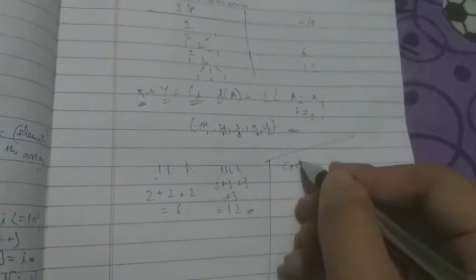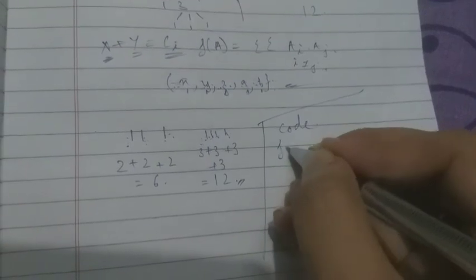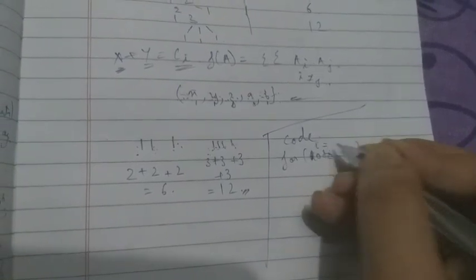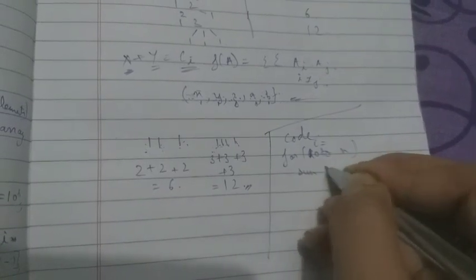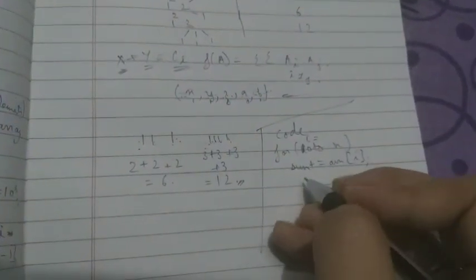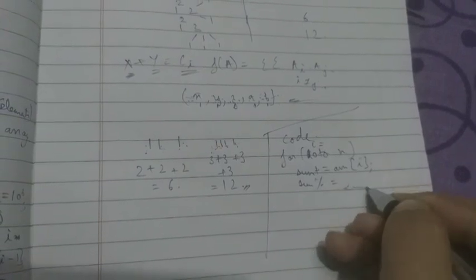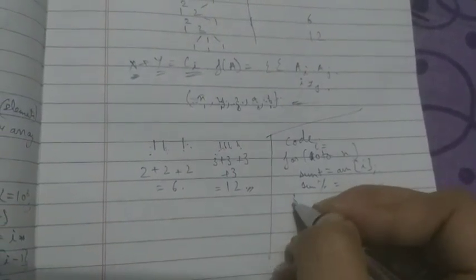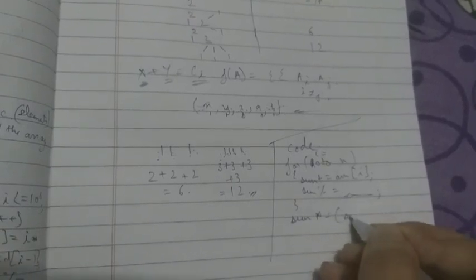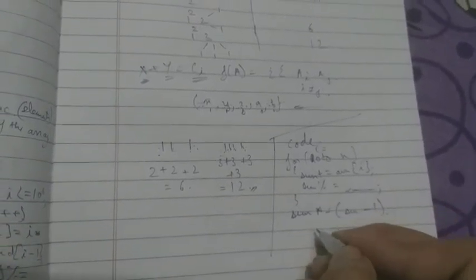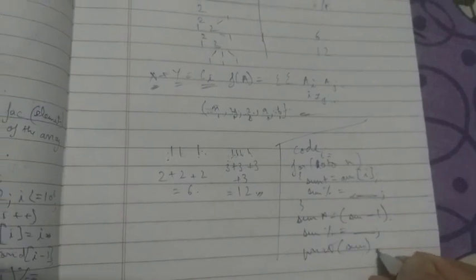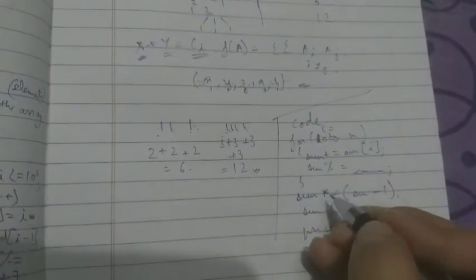The basic code approach: run a loop from 0 to n, find the sum of all elements — sum of array[i]. Don't forget to apply the modulo. Then multiply sum by (sum minus 1), apply mod again, and print sum. This is the correct code for this problem.